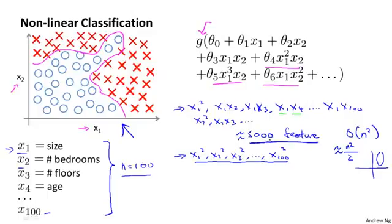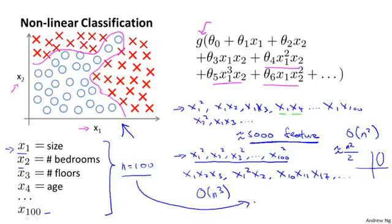So 5000 features seems like a lot. If you were to include the cubic or third-order polynomial features, the x1 x2 x3, x1 squared x2, x10 x11 x17, and so on, you can imagine there are going to be a lot of these features. In fact, they're going to be order n cubed such features. And if n equals 100, you can compute that you end up with on the order of about 170,000 such cubic features. And so, including these higher-order polynomial features when your original feature set n is large, this really dramatically blows up your feature space. And this doesn't seem like a good way to come up with additional features with which to build non-learning classifiers when n is large.